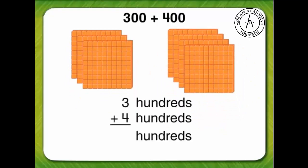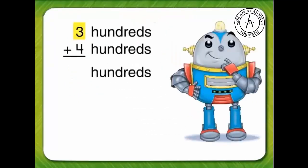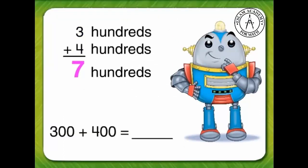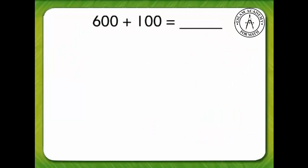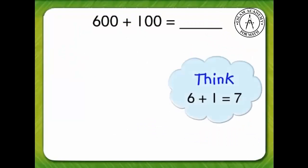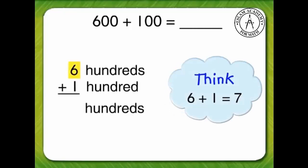Three hundreds plus four hundreds — think: three plus four equals seven, so three hundreds plus four hundreds equals seven hundreds. Now find 600 plus 100. Think: six plus one equals seven, so six hundreds plus one hundred equals seven hundreds.